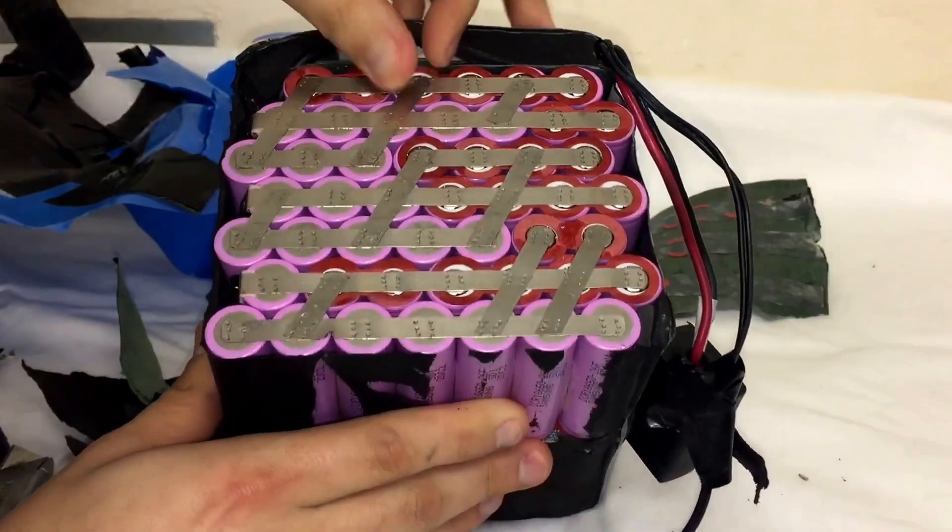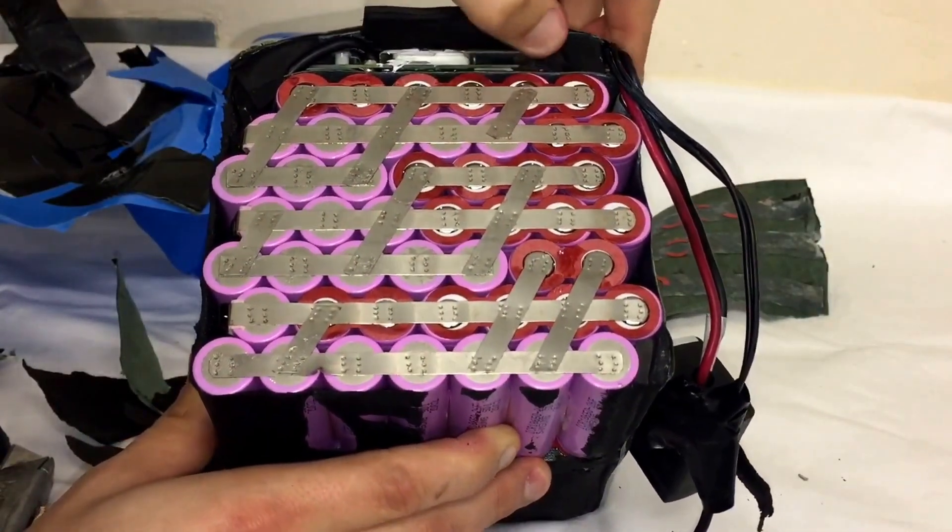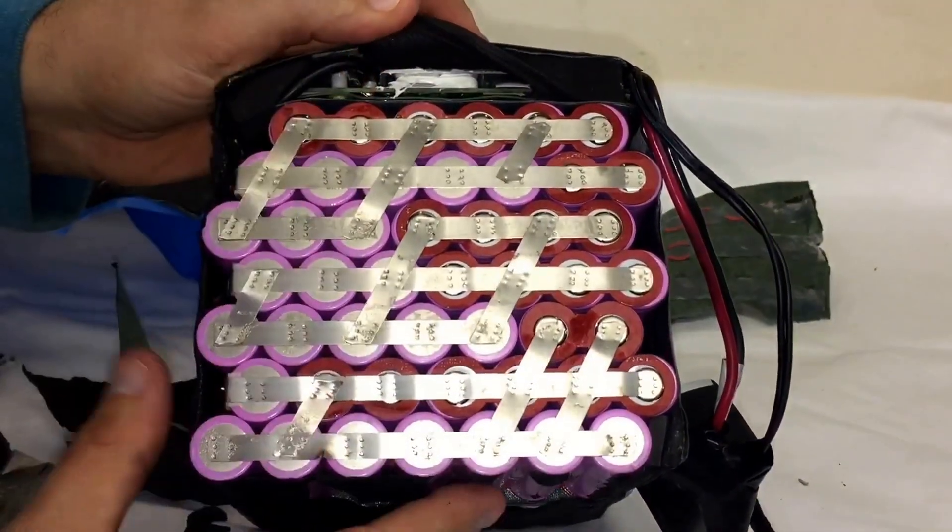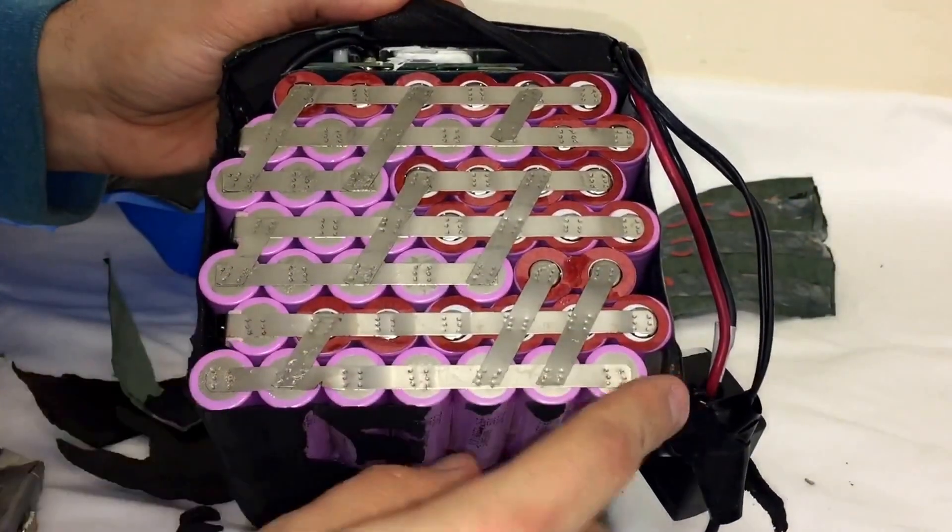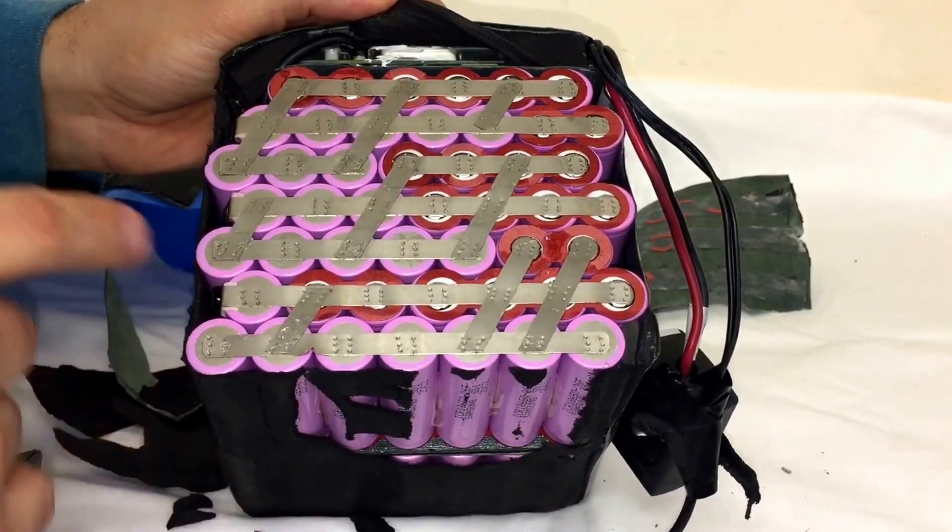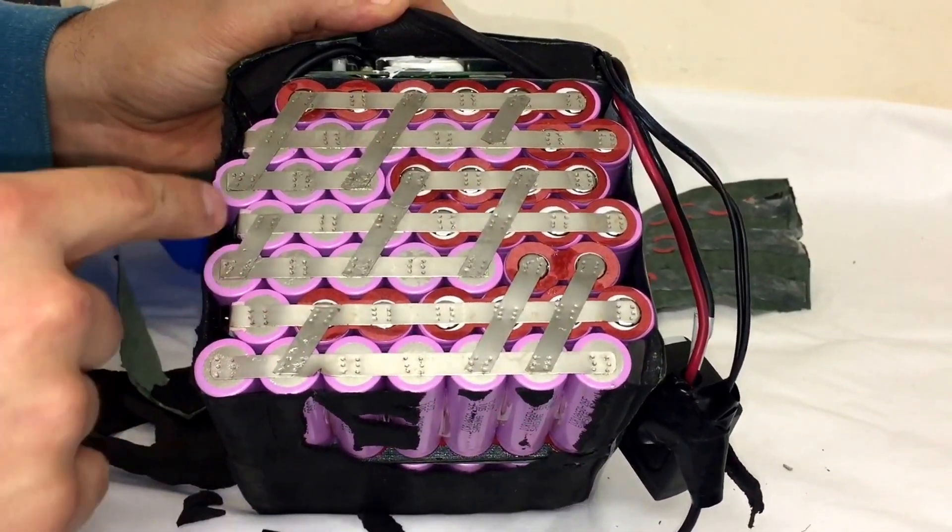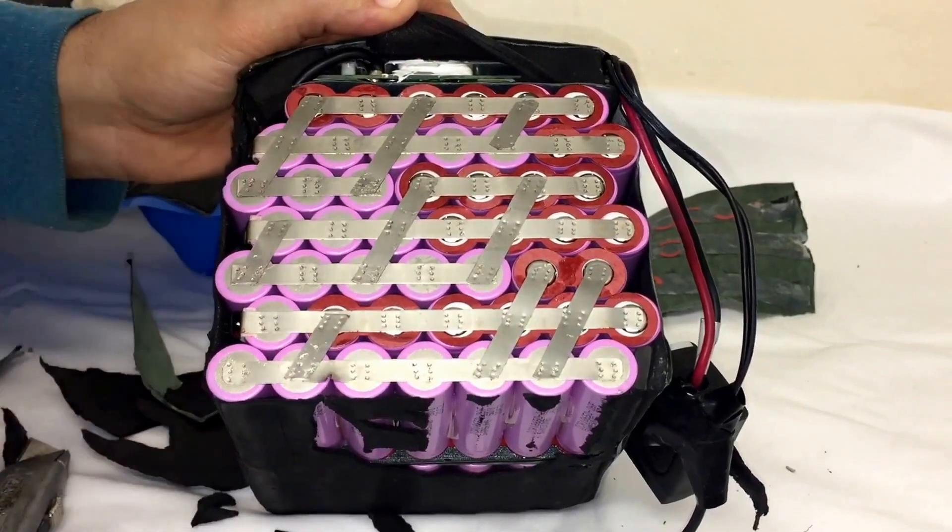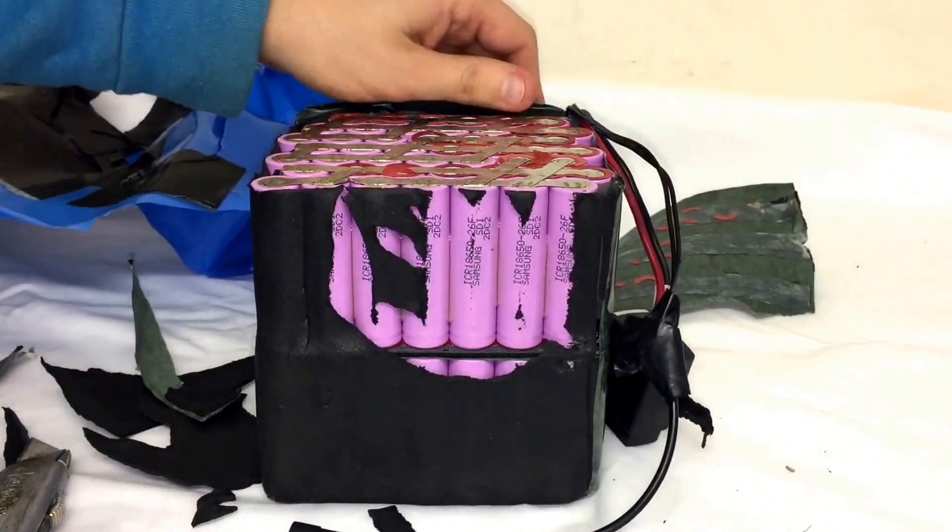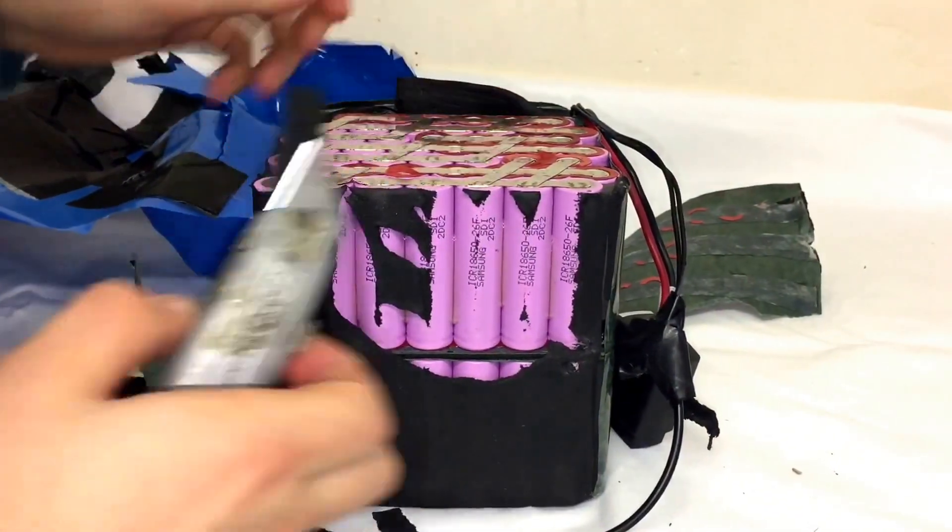But yeah, there you go, lots and lots of batteries. This is, I guess, what they call the BMS, the battery management system. Must be this circuit board here. So we've got one, two, three, four, five, six, seven, and one, two, three, four, five, six, seven. So seven by seven times two, which equals lots of batteries.